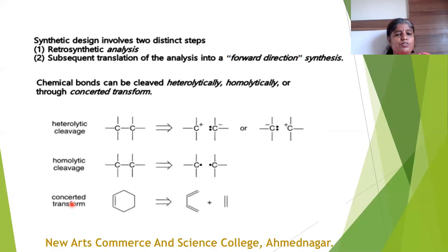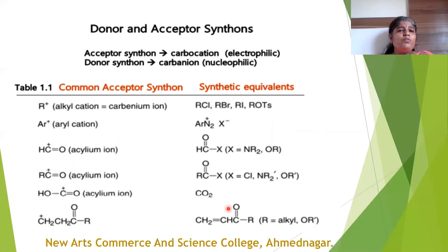The next type of transform is the concerted reaction. In a concerted reaction, bond breaking and bond formation are simultaneous processes. An example of this is the Diels-Alder reaction, which is a 4+2 cycloaddition reaction.